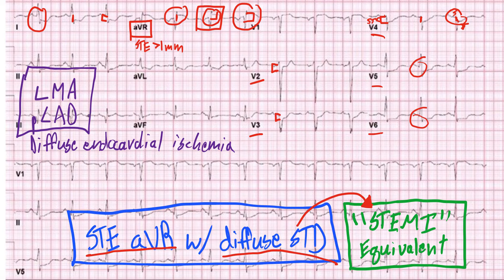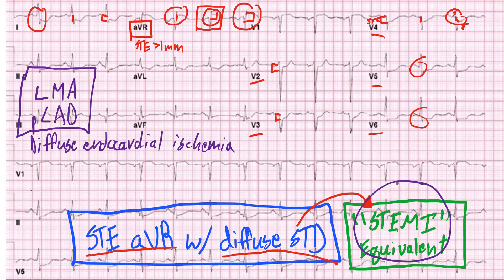Now there are a couple of different scenarios where you can see this pattern as well — sometimes severe hypokalemia, sodium channel blockade, and some of those can have a similar pattern. But it should be a rule-out, with emergent cath lab activation in concordance with your cardiology specialist, rather than sitting on it and seeing what the patient does. Anytime you see ST elevation in AVR with diffuse ST depressions, immediately call your cardiology specialist for cath lab activation until proven otherwise.